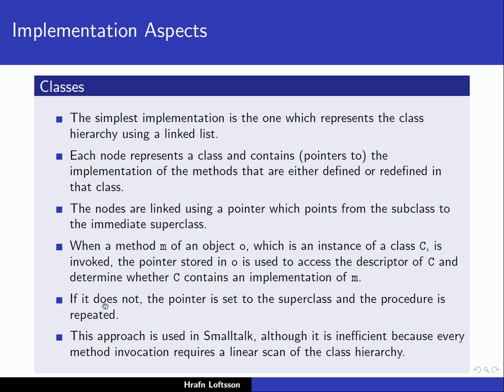If the method does not exist in class C, the pointer is set to the superclass and the procedure is repeated. This approach is used in Smalltalk, for example. The problem is that it's a little bit inefficient because every method invocation requires a linear scan of the class hierarchy.